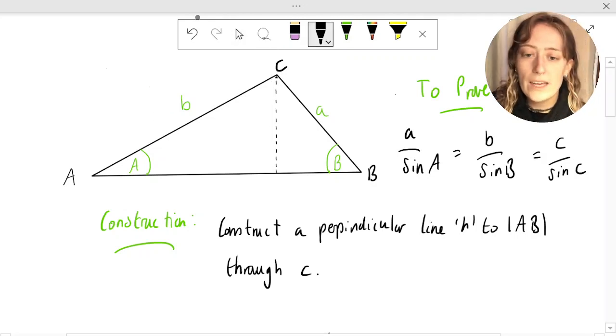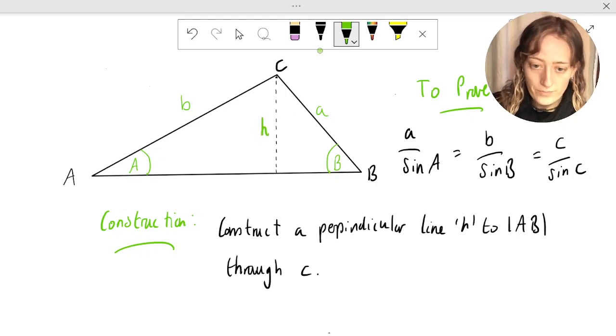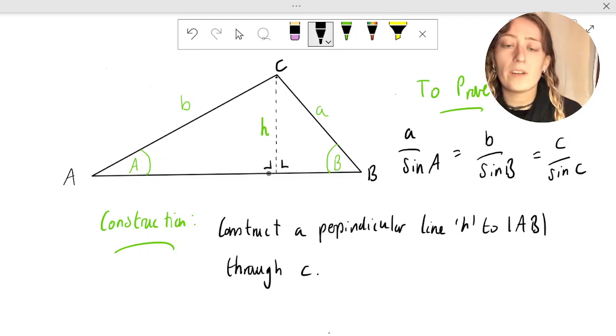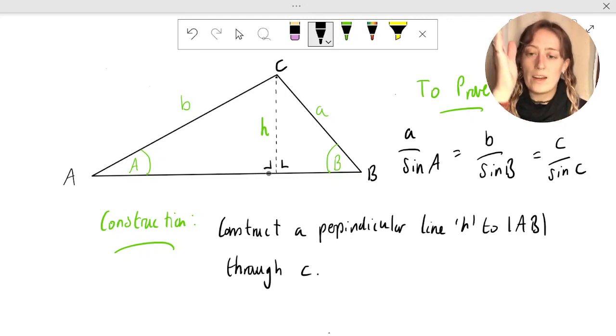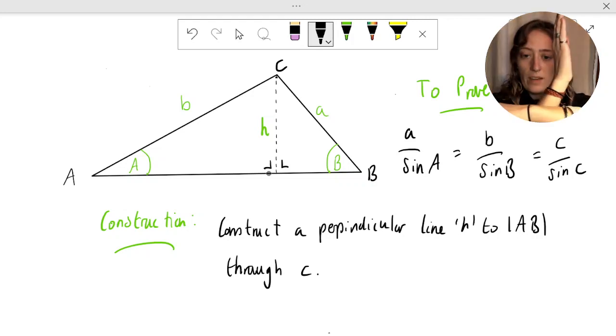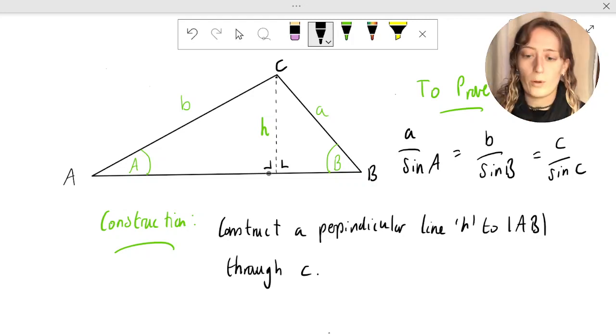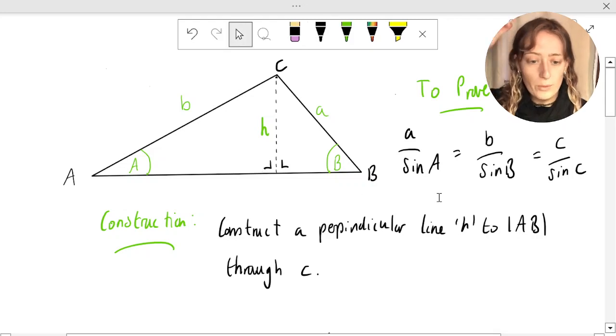Now we can mark that this line is called h and that it is perpendicularly reaching AB. Perpendicular means that it's at right angles. So if this is h, then AB is at right angles across it. That's what perpendicular means. Let's get on with the proof.